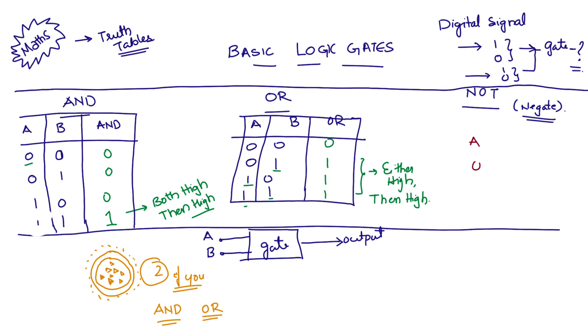The function of a NOT gate, on the other hand, is only to negate the input or to produce an output that is exactly opposite the input. So if the input is high, the output of the NOT gate would be low, which means if the input is 0, the output would be 1. If the input is 1, the output would be 0.